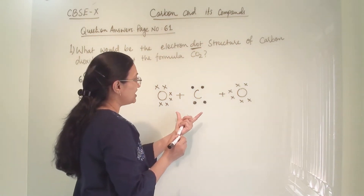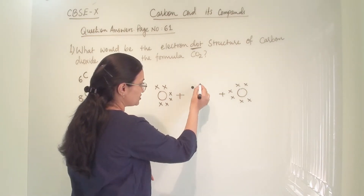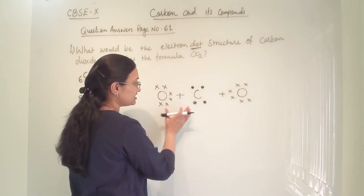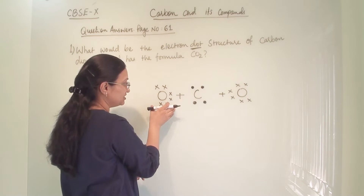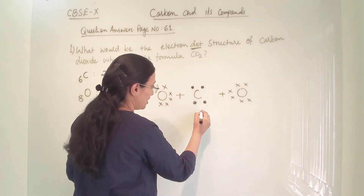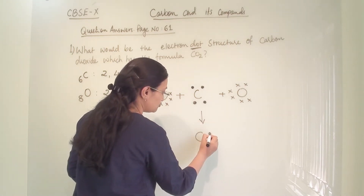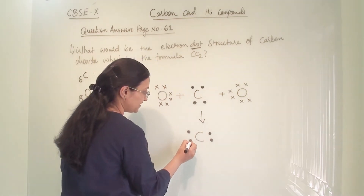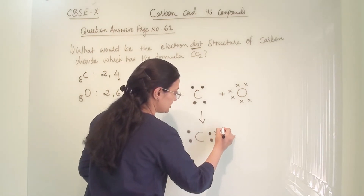Now, how are they going to share? These 2 electrons and these 2 electrons complete 4 electrons. Carbon will share 2 electrons with one oxygen and 2 electrons with the other oxygen. So the structure shows 2 electrons from carbon on one side and 2 electrons from carbon on the other side, with each oxygen sharing 2 electrons back.